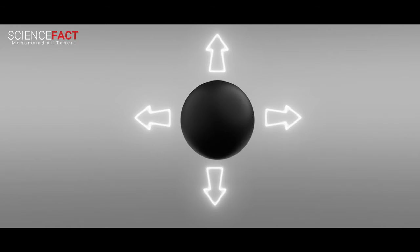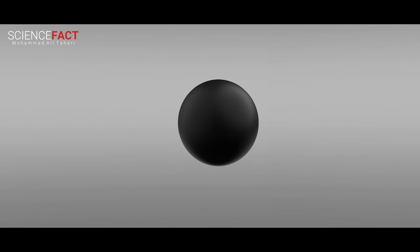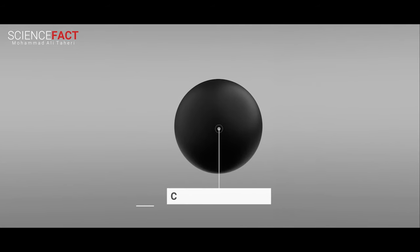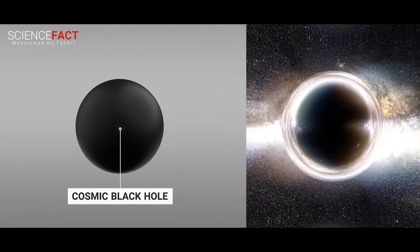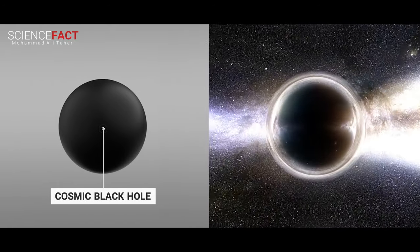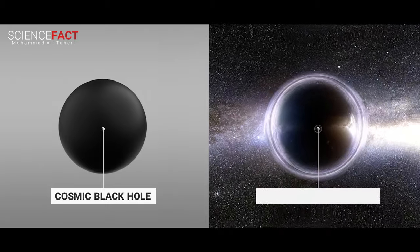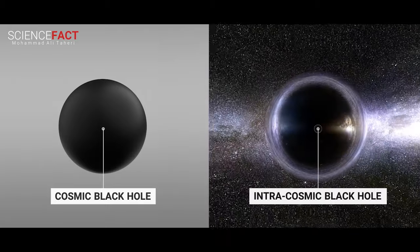Space and time do not exist outside a cosmic black hole, so we have considered a hypothetical space around it to enable us to examine and study it. To better describe the cosmic black hole, we will make comparisons with the known black holes in the cosmos and call them the intracosmic black holes.